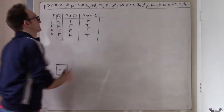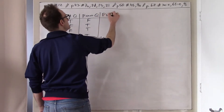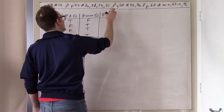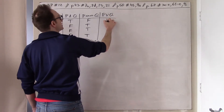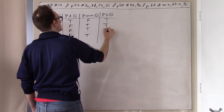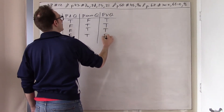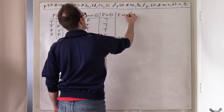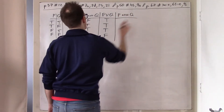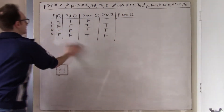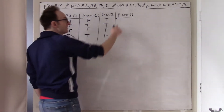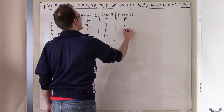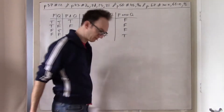Also, we can do OR while we're at it. P OR Q is: true, true, true, false. And so P NOR Q — the negation of this — is: false, false, false, true. Okay, that's all you have to do for this problem.